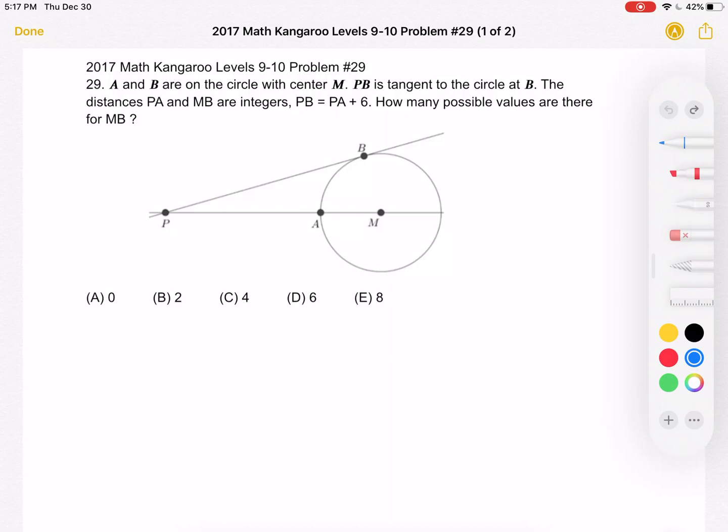The distances PA and MB are integers. PB is equal to PA plus 6. How many possible values are there for MB?